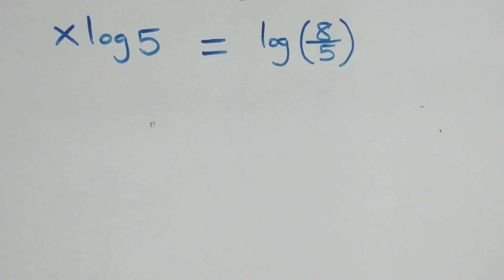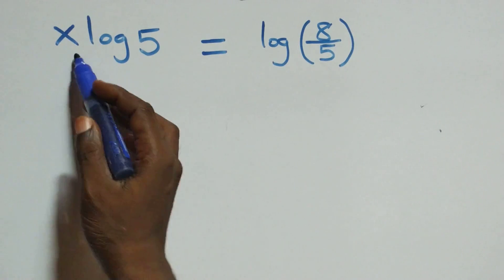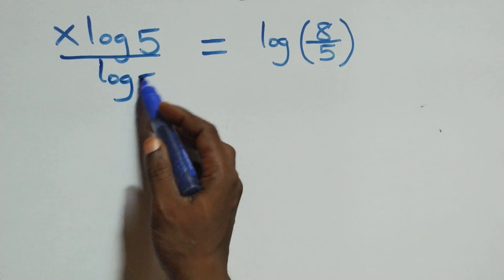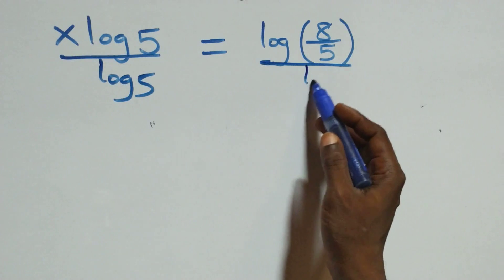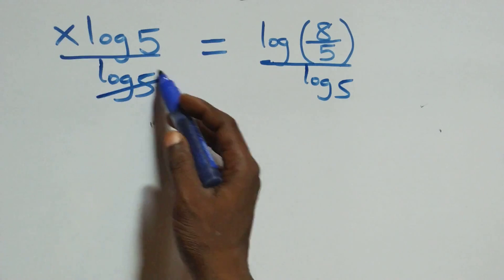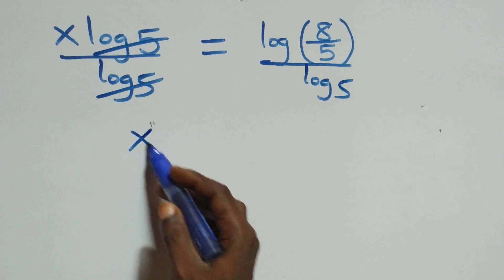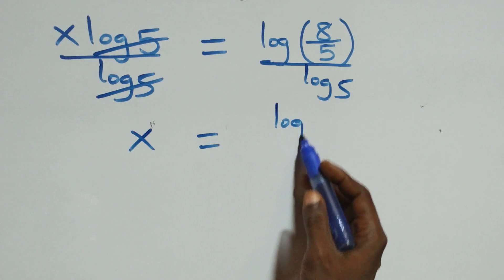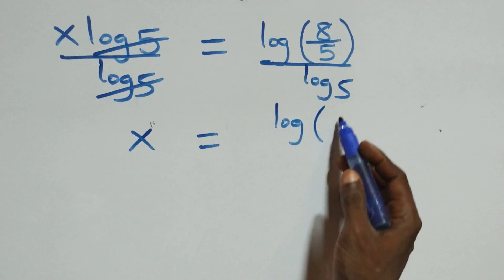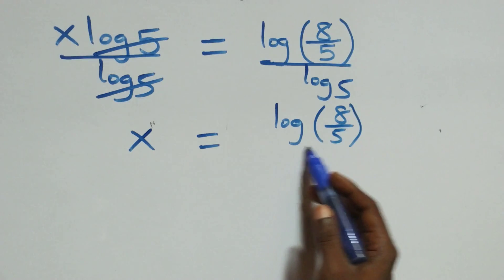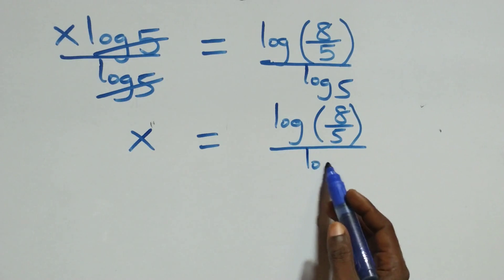Next step, we divide both sides by log 5. Log 5 cancels on the left, and we have x equals log(8/5) divided by log 5.